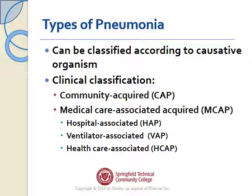We can classify pneumonia in a couple different ways. It can be classified according to the causative organism, like a pseudomonas pneumonia or MRSA pneumonia. But more typically you see a clinical classification — community acquired pneumonia or medical care associated pneumonia. That medical care pneumonia is broken down into hospital associated pneumonia, ventilator associated pneumonia, or healthcare associated pneumonia — but we bunch those together and call it medical care associated pneumonia.